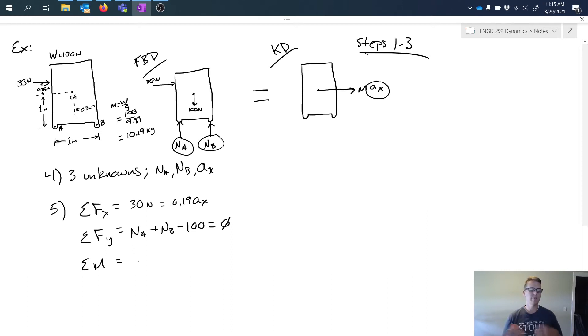And finally, summation of moments. Now, in order to sum the moments, we have to pick a location that we want to sum around. That's kind of arbitrary. We can pick pretty much any point because it always has to be true. The equation has to be true regardless of where we sum around. But I'm going to pick the center of gravity. It's sometimes convenient as a location.